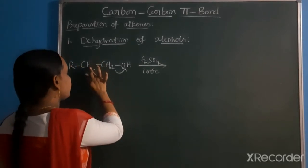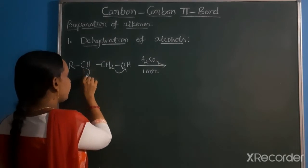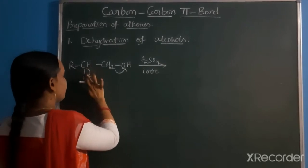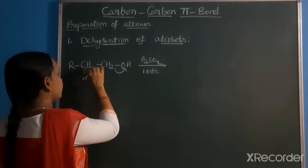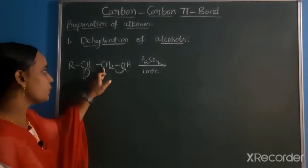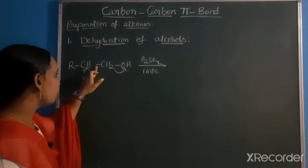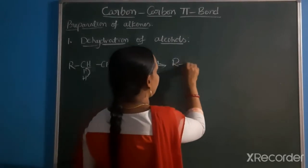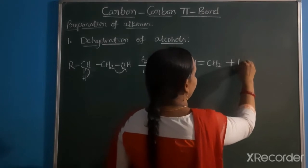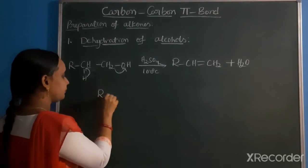The adjacent carbon and hydrogen are eliminated. H plus ion is eliminated, creating a positive charge here. Then OH minus ion is eliminated, creating a negative charge. These charges combine to form a double bond - CH double bond CH2 is formed with the elimination of water.